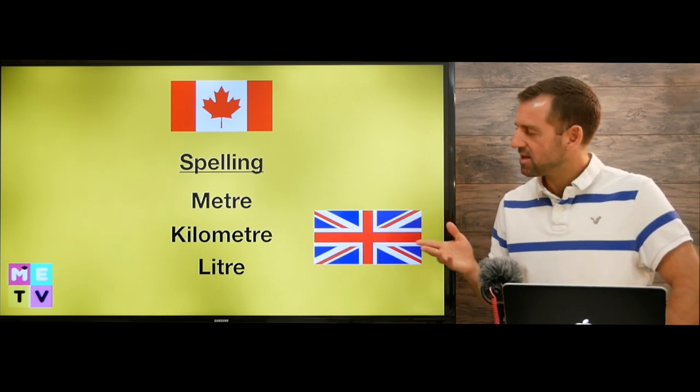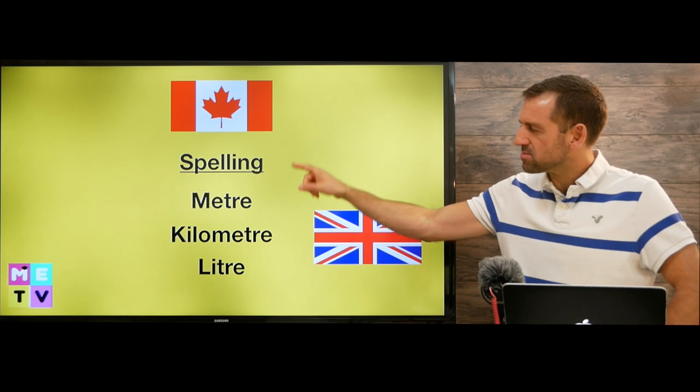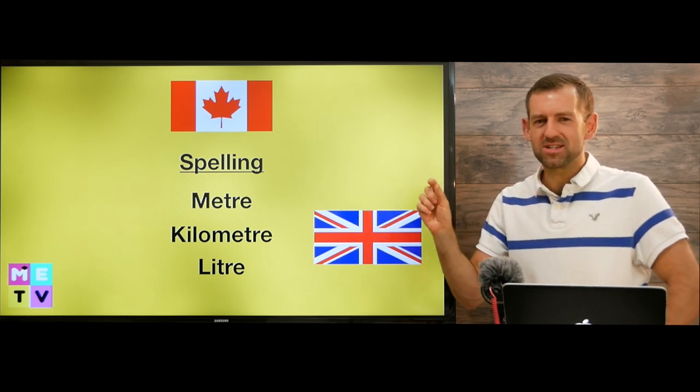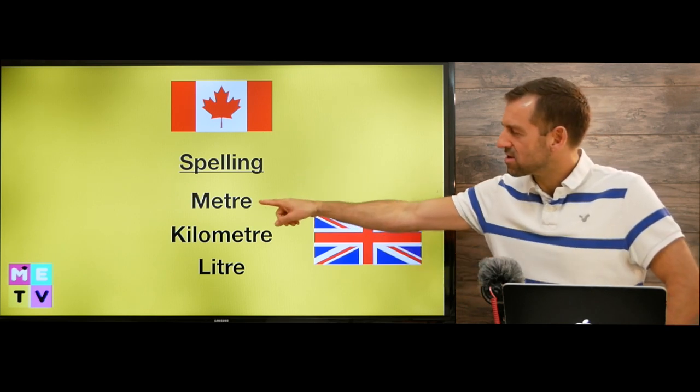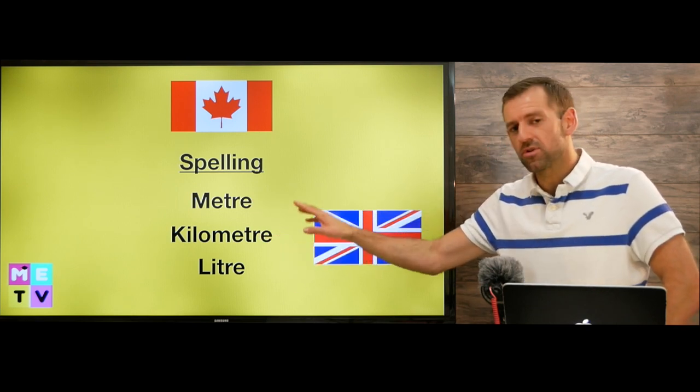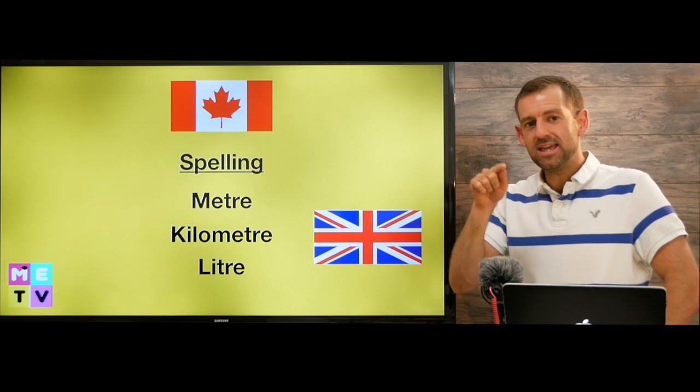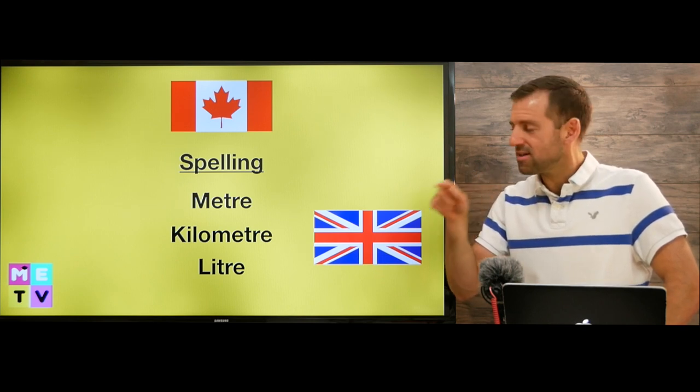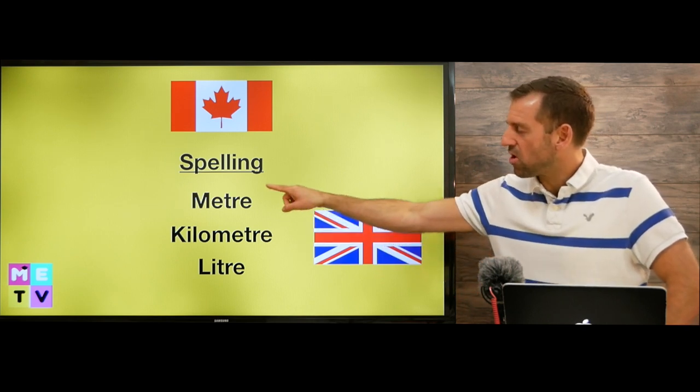Another thing I want to point out is that in Canada, we spell words a little bit differently. So look at this: meter R-E, kilometer R-E, liter R-E. So for a lot of words that end in E-R in American spelling, we switch it to R-E.